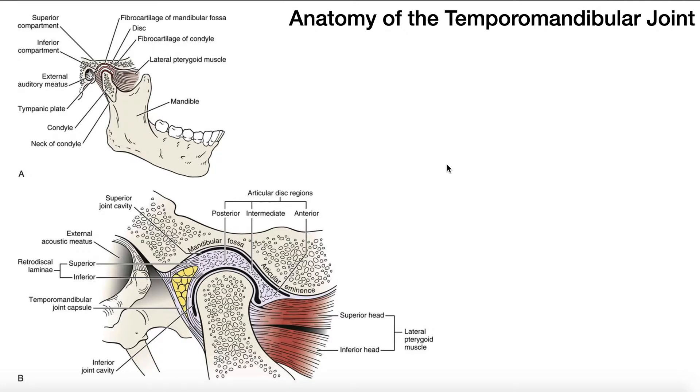The only bone where there's any movement, other than possibly the hyoid, which is not directly connected here, is the mandible. We have to understand the structure of this joint to really appreciate the movements in the next video.